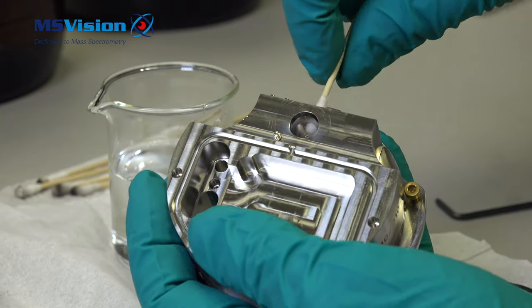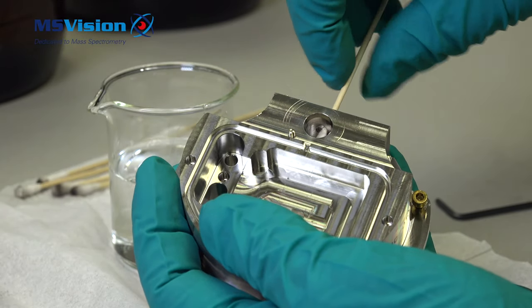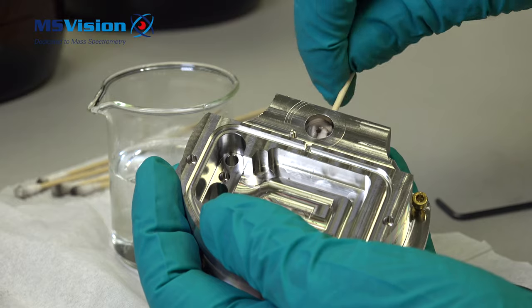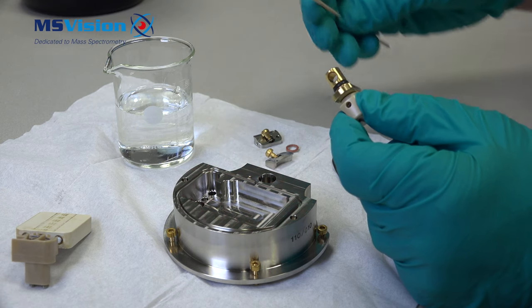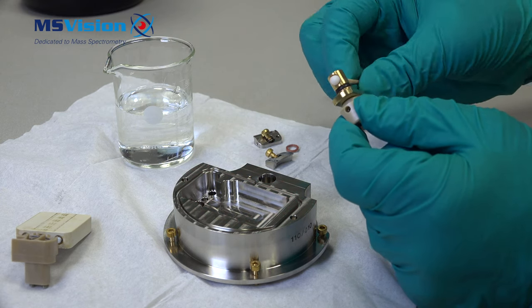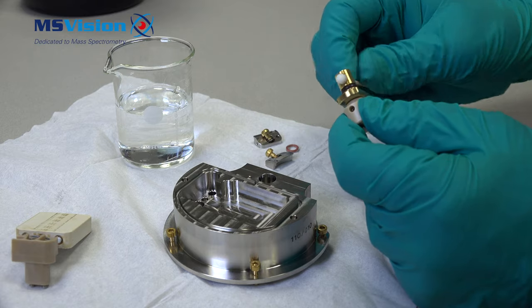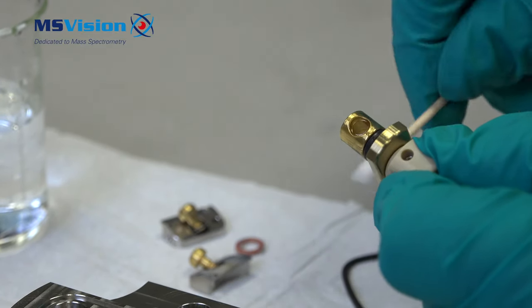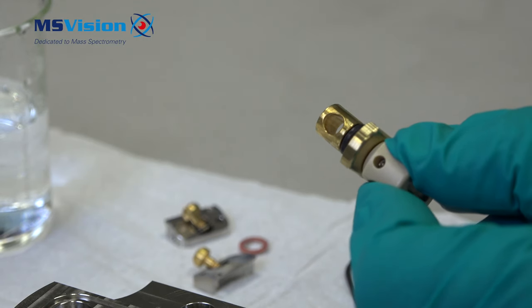Also clean the inside here behind where the cone fits. Now clean the isolation valve with the same water and acid solution. Use water to rinse off all the formic acid from all of the source components.